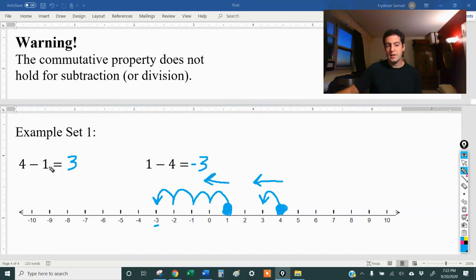So if my first number is bigger than my second number, then I'm going to get a positive answer. But if my first number is smaller than my second number, then I'm going to get a negative answer.